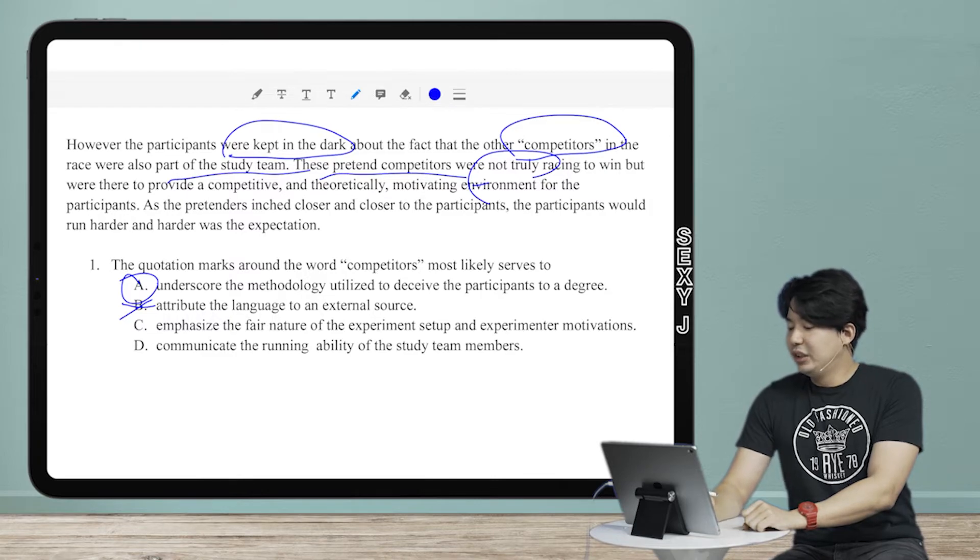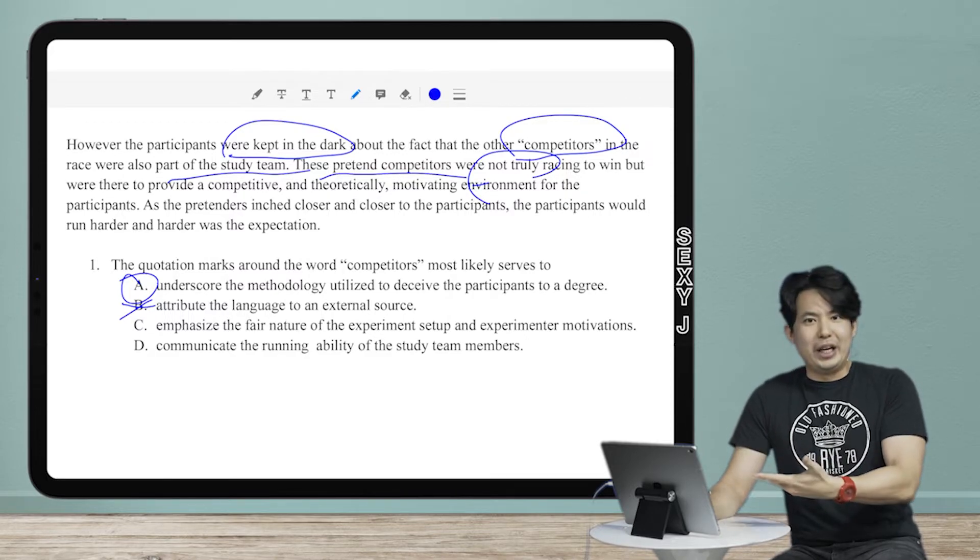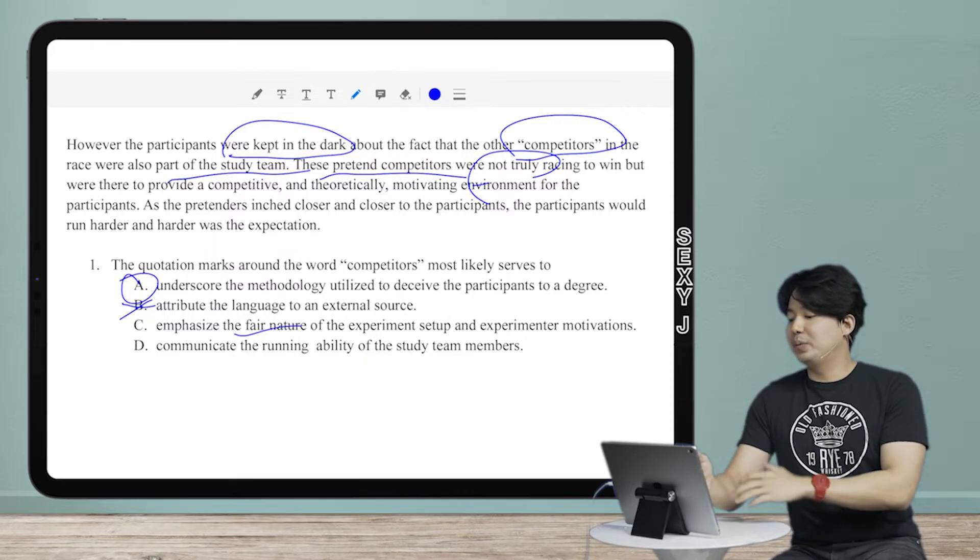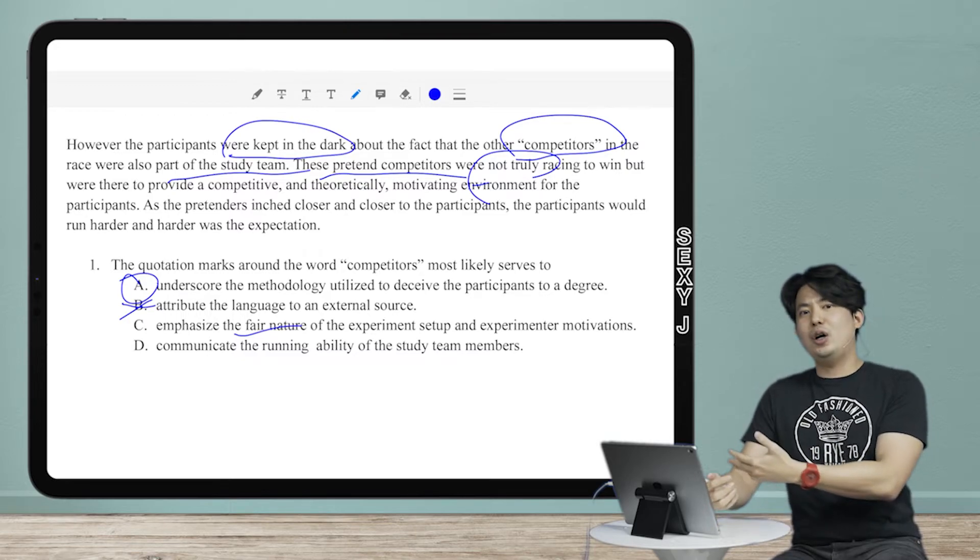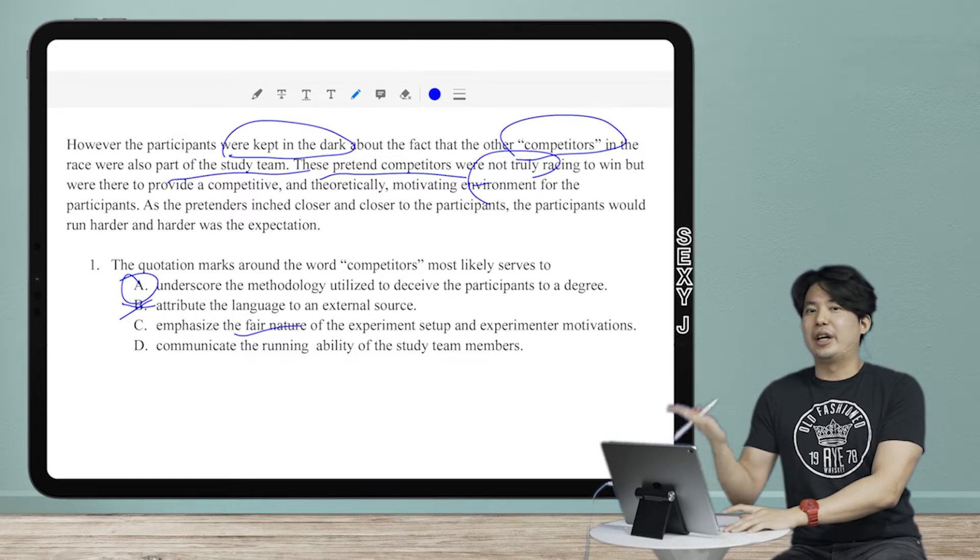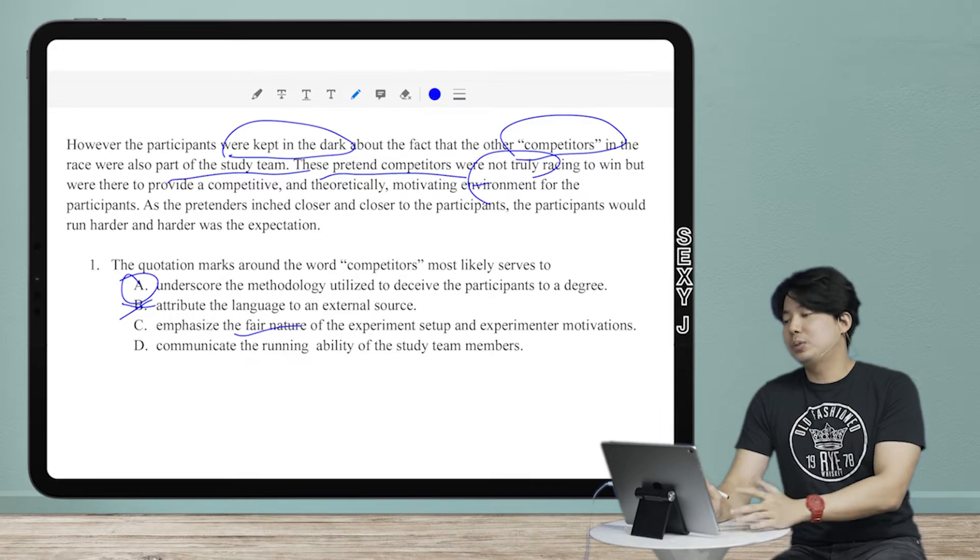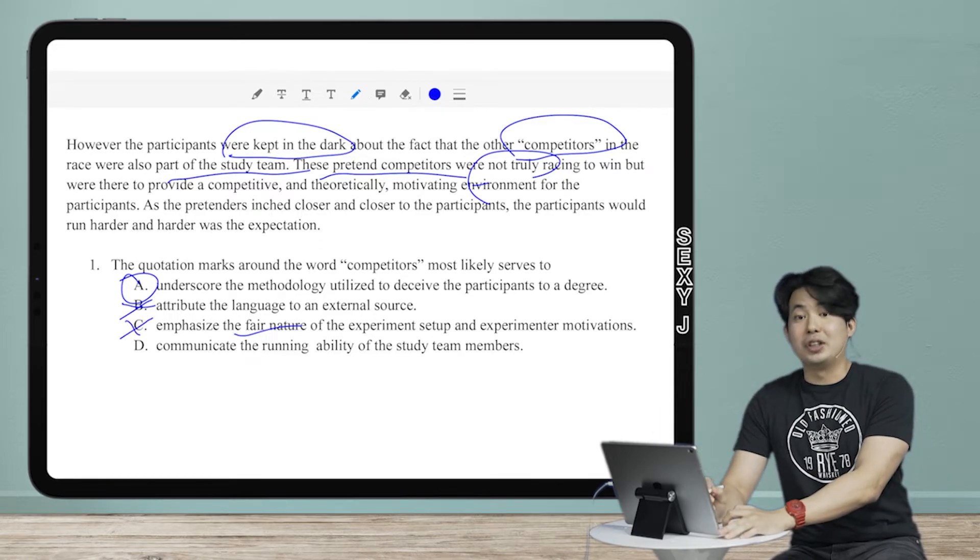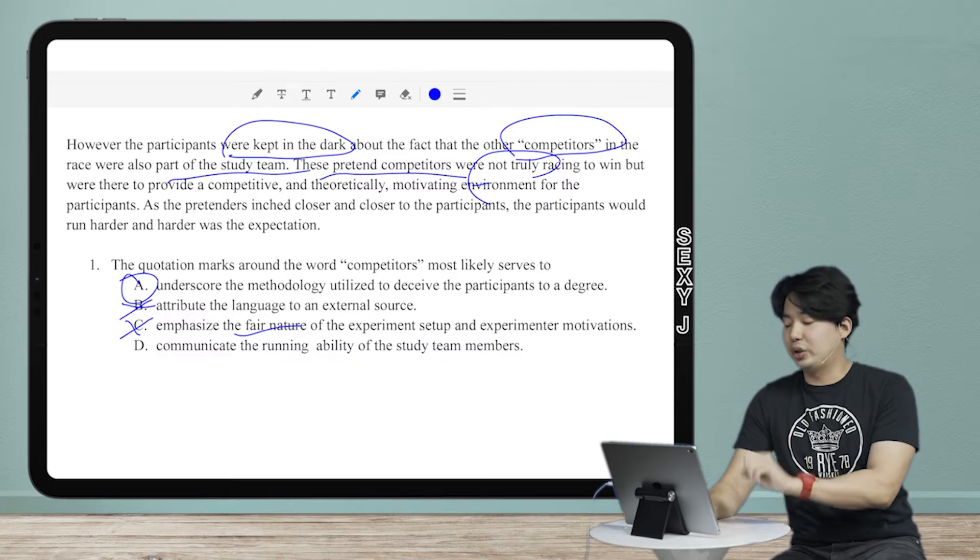And then C, emphasize the fair nature of the experiment setup and experimental motivation. So I made this test, right? Because I'm that good. I put that in here because sometimes people see the word competition and they're like oh, fair competition. I feel like they're kind of related when you're kind of just letting your brain go wherever. Which, I mean, I don't blame you guys. It is a long test. So that does happen to people. So that's how they try to get you here.